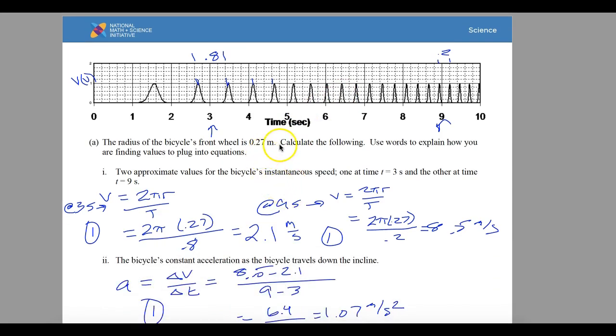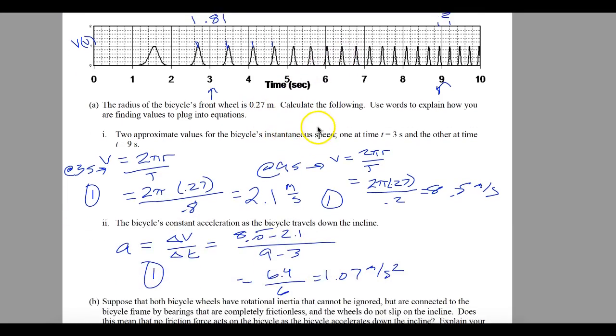They give the radius of the wheel and they want us to calculate some things, and they want us to use words to explain how we are finding the values. So all I did here was I just showed the equations. I never used words. You, on the other hand, need to absolutely positively use words.